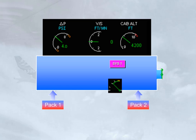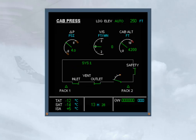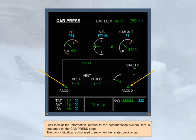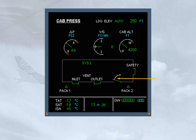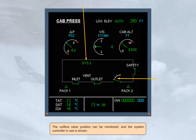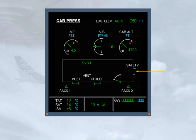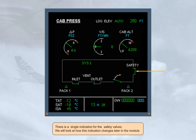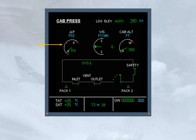The crew can monitor all cabin pressure functions on the ECAM cabin pressure page. The pack indication is displayed green when the related pack is on. The outflow valve position can be monitored, and the system controller in use is shown. There is a single indication for the safety valves. The cabin differential pressure, or delta P, shows the difference in PSI between the cabin pressure and external pressure. This differential pressure will be at zero on the ground and increase as the aircraft climbs.